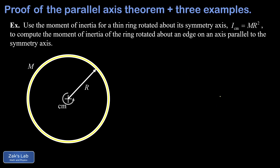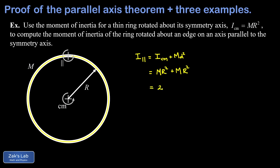Next, for a thin ring: the moment of inertia about its center is M R squared. We want the moment of inertia about one edge of the ring, which is relevant to a real lab activity where you hang a ring on a horizontal rod and watch it oscillate — the period depends on the moment of inertia about one edge, not the center. Applying the parallel axis theorem: I_CM plus M d squared, where d equals the radius R. We get M R squared plus M R squared, giving 2 M R squared.